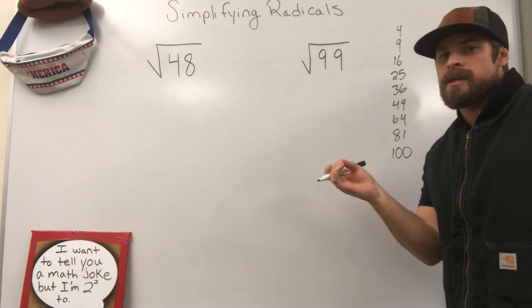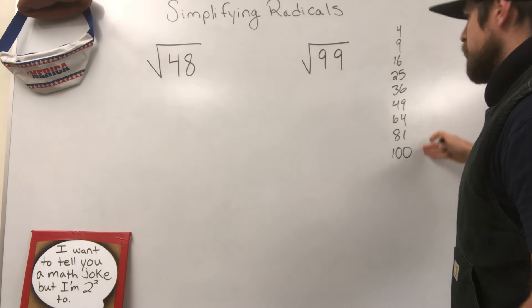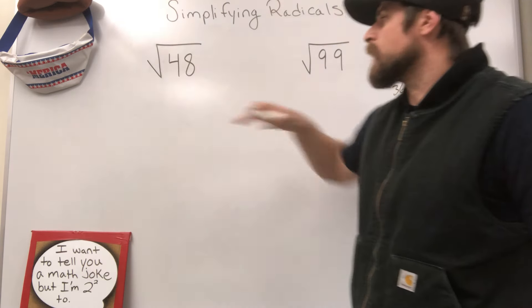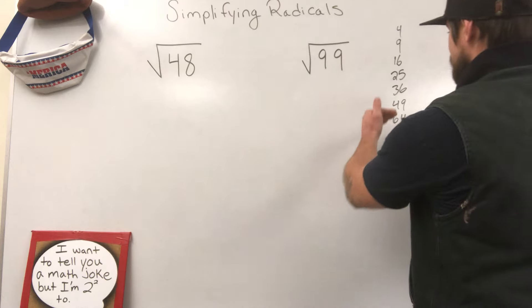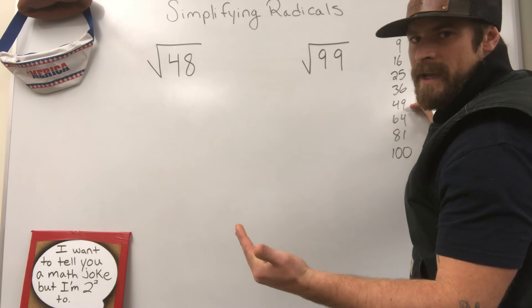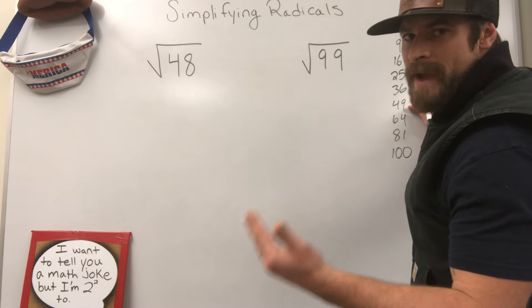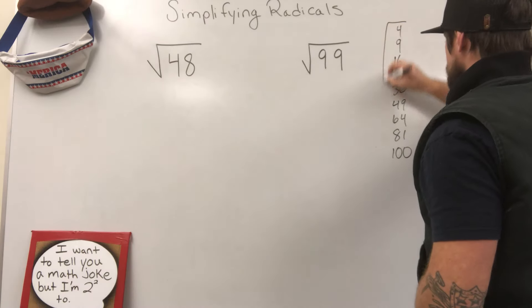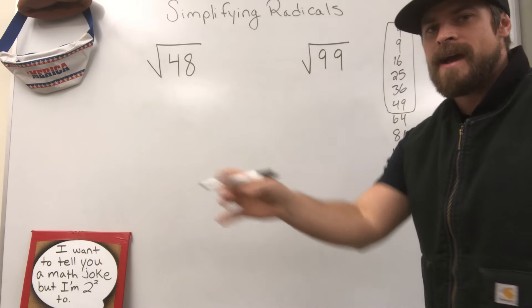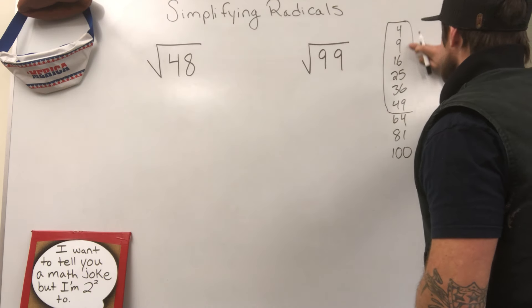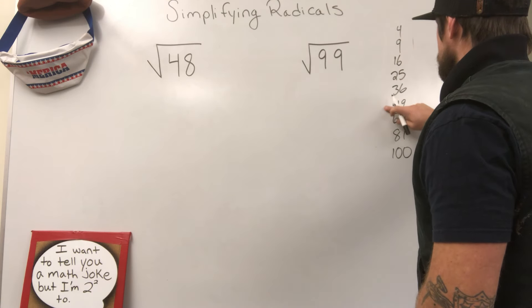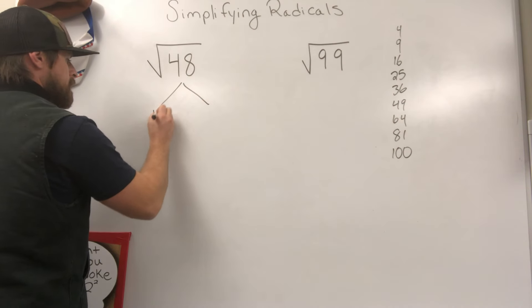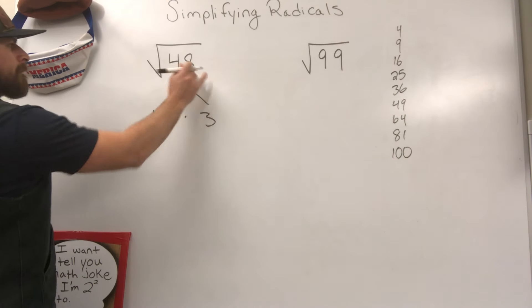We now need to ask ourselves, are any of these factors of the number inside the radical? So right now we're dealing with 48. I need to ask myself, I can stop at 49. We obviously know that anything above 49 is not going to be a factor of 48. So what of these values, if any, can I use as a factor of 48? And I look at that and I say 16. Right away, 16 stands out to me because I know that 16 times 3 gives me 48.